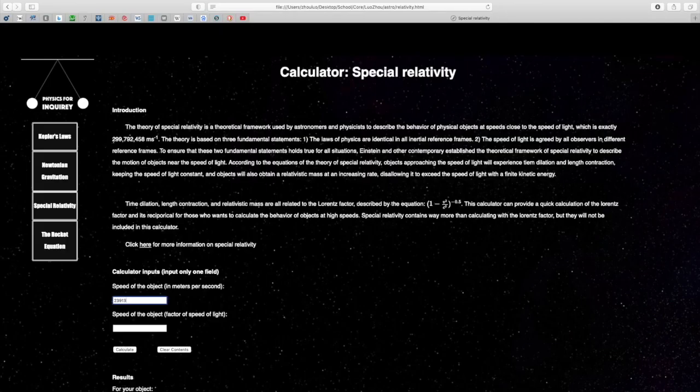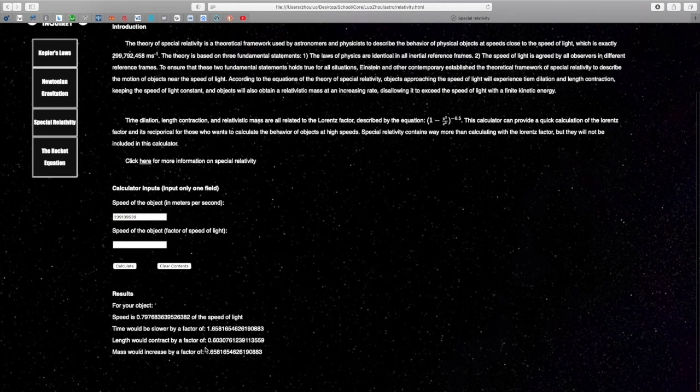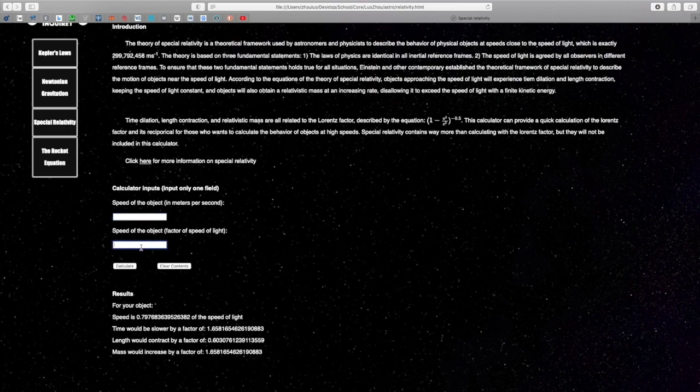The link for the calculator in the description uses the Lorentz factor to calculate the time dilation, length contraction, and relativistic mass of an object when it approaches a certain velocity, either in terms of meters per second or as a fraction of the speed of light.